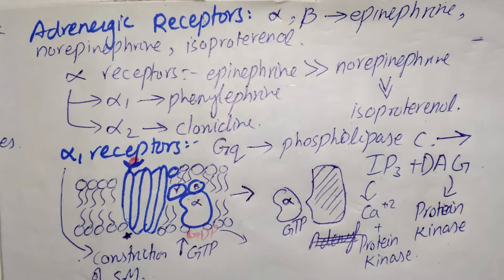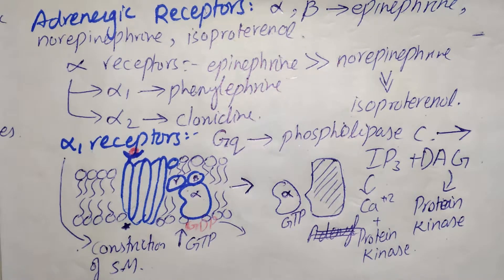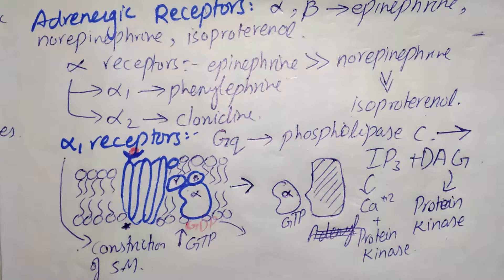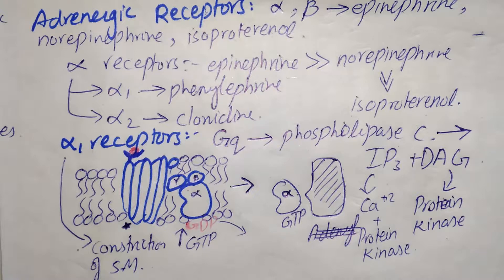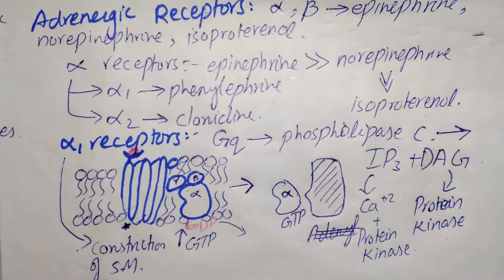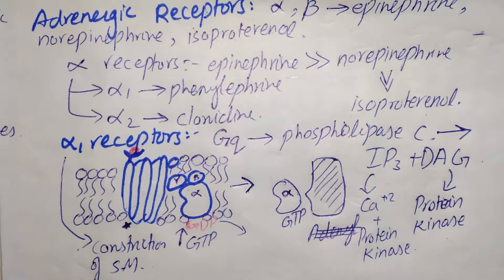It is important to remember that alpha 1 receptors have GQ-coupled protein. GQ causes activation of phospholipase C, which leads to the release of inositol 1,4,5-trisphosphate (IP3) and diacylglycerol (DAG). These further lead to protein kinase activation and calcium release from the endoplasmic reticulum into the cytosol, causing further cellular actions.